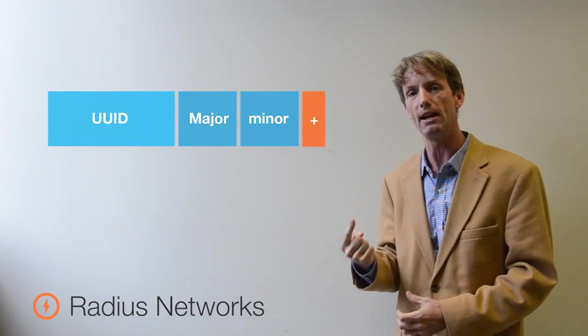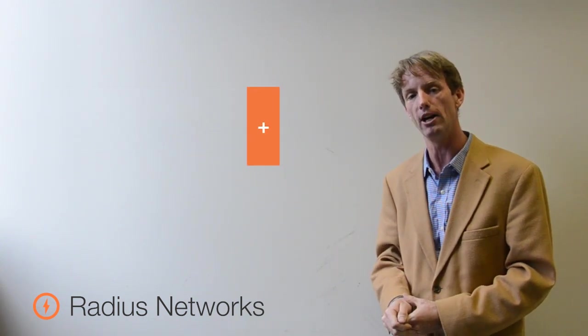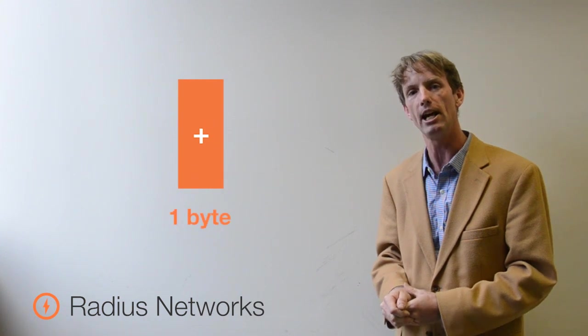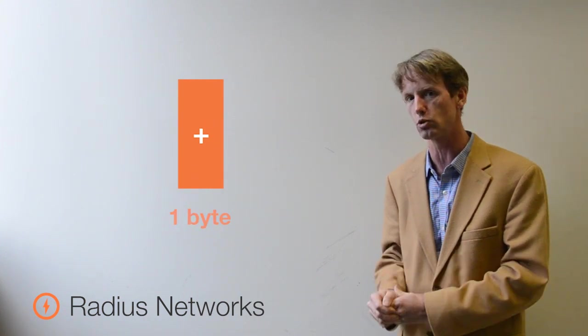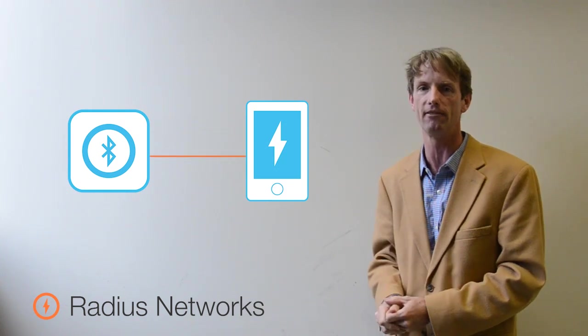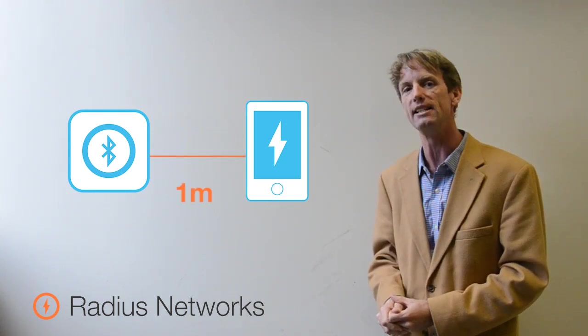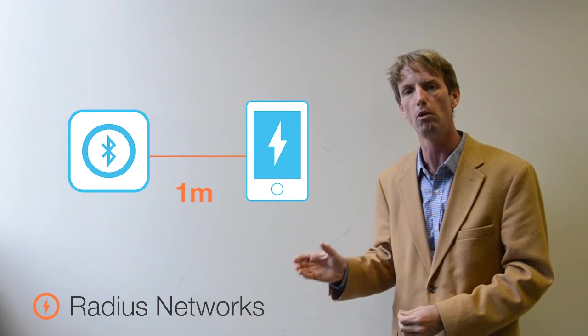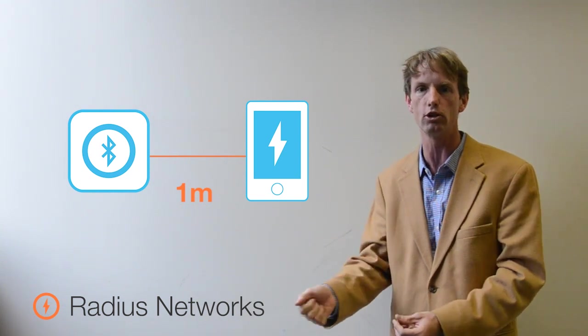The final field in an iBeacon advertisement is the power calibration value. It is a one-byte value that tells you what the estimated signal strength is at one meter away from the beacon as received by an iOS device. This allows you to get a distance estimate of how far your mobile phone or tablet is away from the beacon transmitter.